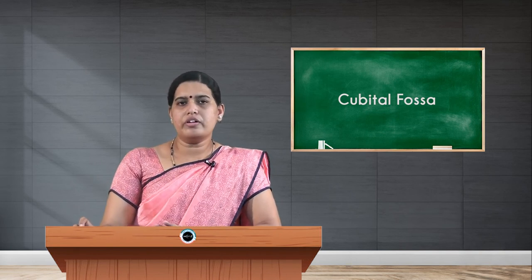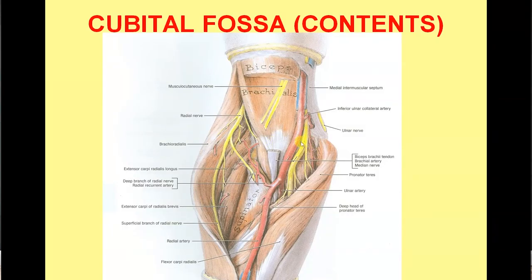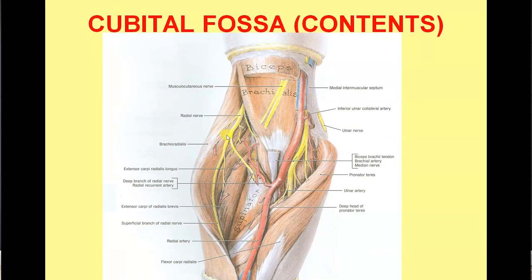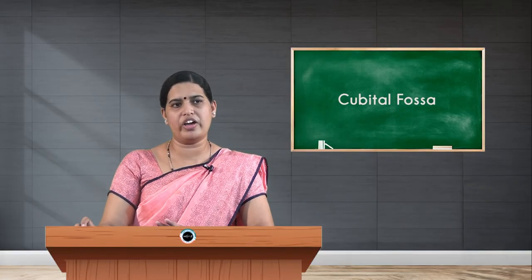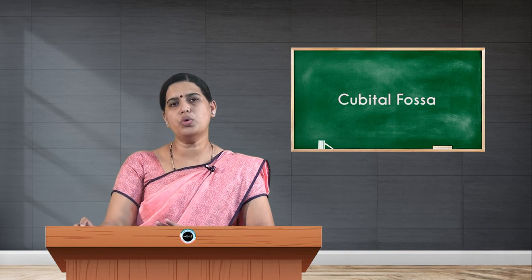Showing the contents from medial to lateral: the median nerve is the most medial structure, then the brachial artery with its two terminal branches — radial artery and the largest terminal branch, the ulnar artery — then the tendon of biceps brachii, and laterally the radial nerve with its two terminations: the superficial branch, which becomes cutaneous, and the deep branch, also called the posterior interosseous nerve, which pierces the supinator muscle and enters the posterior compartment of the forearm to supply the muscles there.